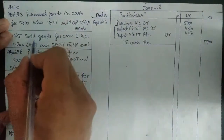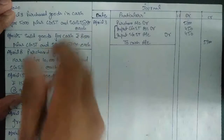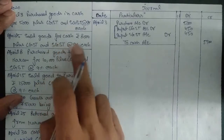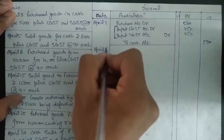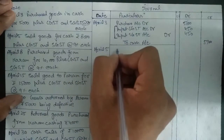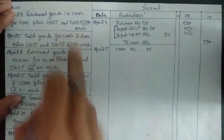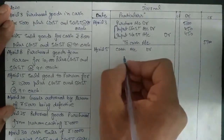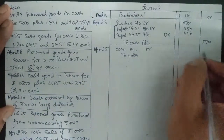The next entry is: sold goods for cash ₹8,000 plus CGST and SGST at 9% each — same slab rate of 9% each for central and state. On April 5th, for the sale of goods we debit Cash account. We are selling goods of ₹8,000 but we will receive more cash because we also charge GST. So Cash account debit, to Sales account — the sale amount is ₹8,000 only.